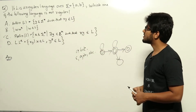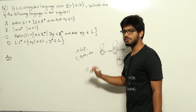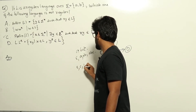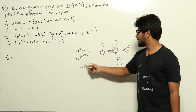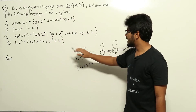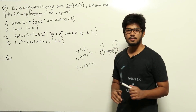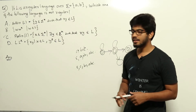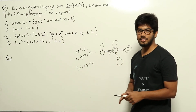Now look at option A: suffix of L, which is the set of y belonging to epsilon-star such that xy belongs to L. The suffix of 'abc' would be epsilon, c, bc, and abc. This is also regular. For language L, we know that if L is regular, L-reverse will also be regular, meaning we can construct a DFA for L-reverse. Then, the prefix of L-reverse corresponds to the suffix of L.